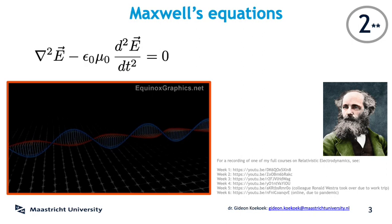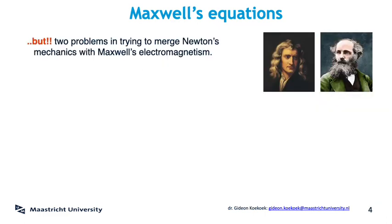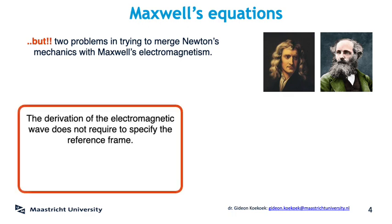Here comes the historically important part: Maxwell's results do not go well with Newtonian mechanics. Usually, when you calculate the velocity of some moving thing, you have to specify with respect to what the thing is doing the moving — this is what we know from Newtonian mechanics. You cannot say how fast the car is moving without first having specified the coordinate system of the road. But Maxwell's equations give the velocity of light without having said with respect to what they are being measured. The derivation of the wave equation does not care about the observer's inertial frame — the speed of light comes out the same always. So Maxwell's equations seem to predict that the speed of light is the same in all inertial systems.